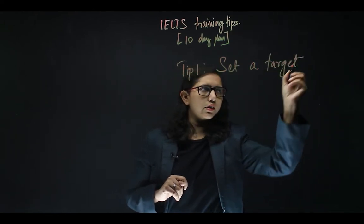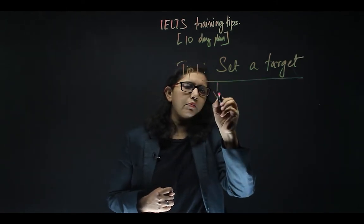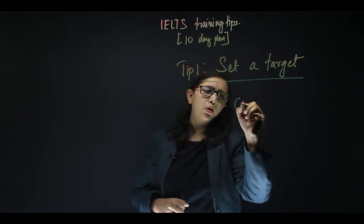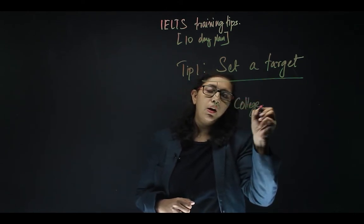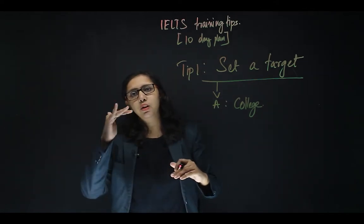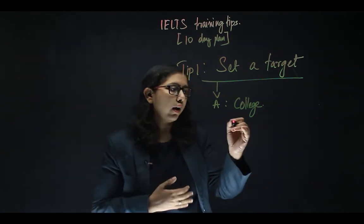Now how do I know what my target score or target band is? If you're going for your academic IELTS, then this target is going to be set by the college that you are applying for. The college will have, depending on the course that you're applying for, a set of parameters that you need to meet.